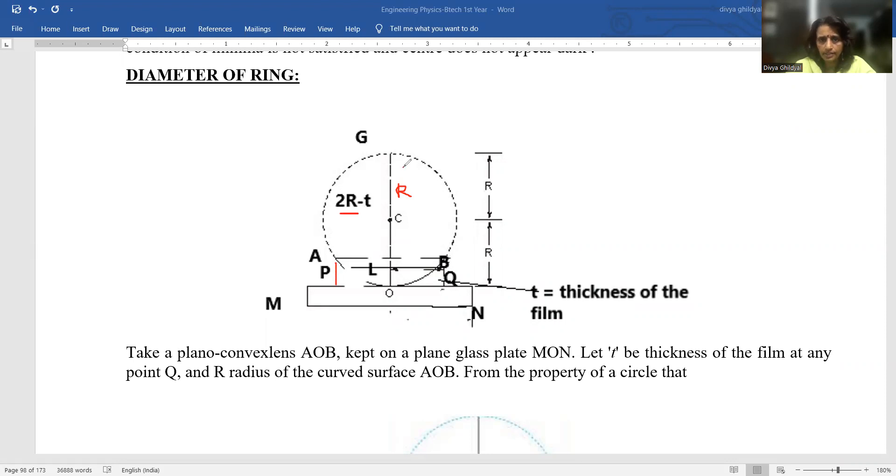This much distance becomes equal to 2R minus T, because this is T. So, R plus R minus T, this distance is 2R minus T.